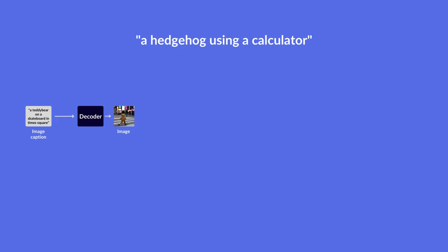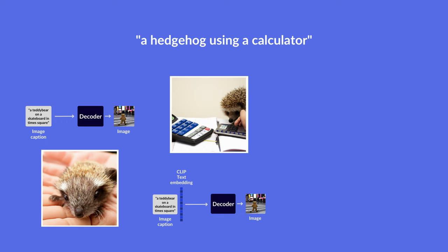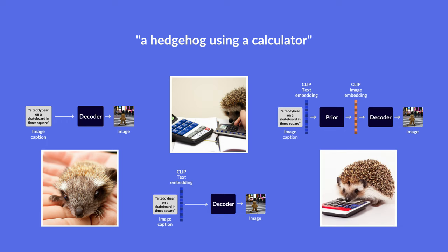Let's look at an example from the paper. For the caption 'a hedgehog using a calculator,' passing the caption directly to the decoder gives one image, and passing the text embedding directly gives another. Whereas if we have a prior, we get a noticeably better output image. Using the text embedding gives an acceptable result, but the problem is you lose the capability of generating variations over images — which we will discuss a little later in this video.